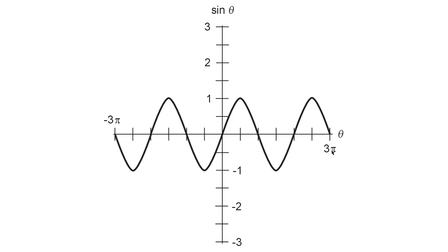What you would have to do is multiply the entire function appropriately in order to get the number of cycles you want. But generally speaking, you would assign time values to these angles, rather than multiplying the function itself.